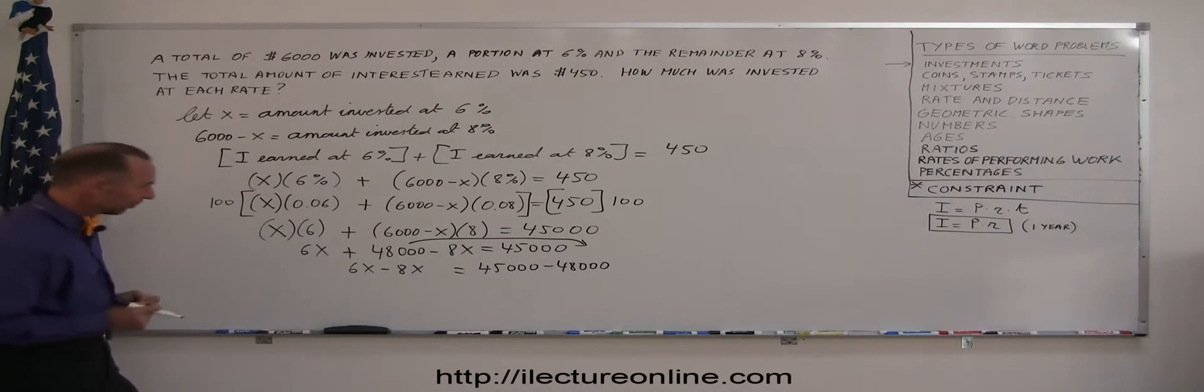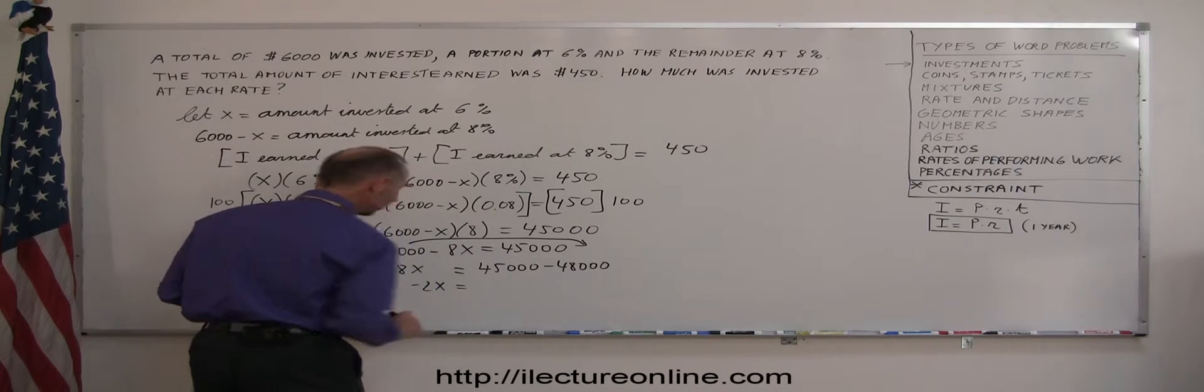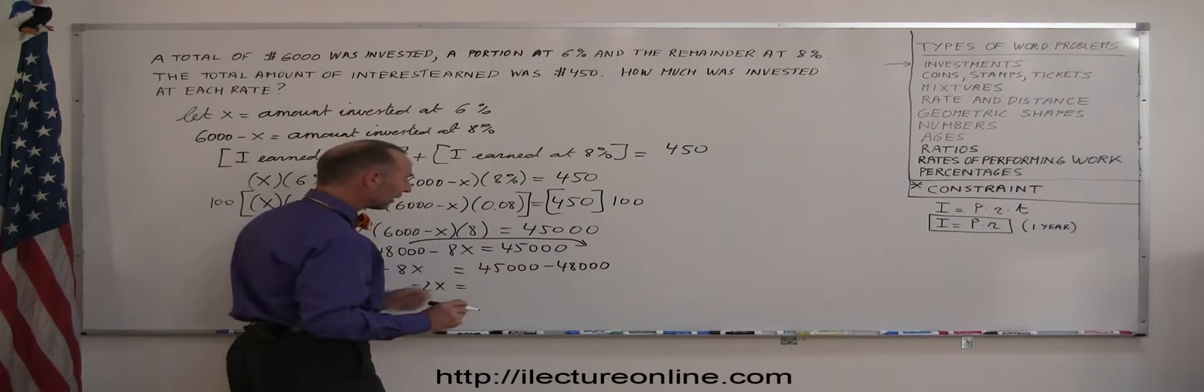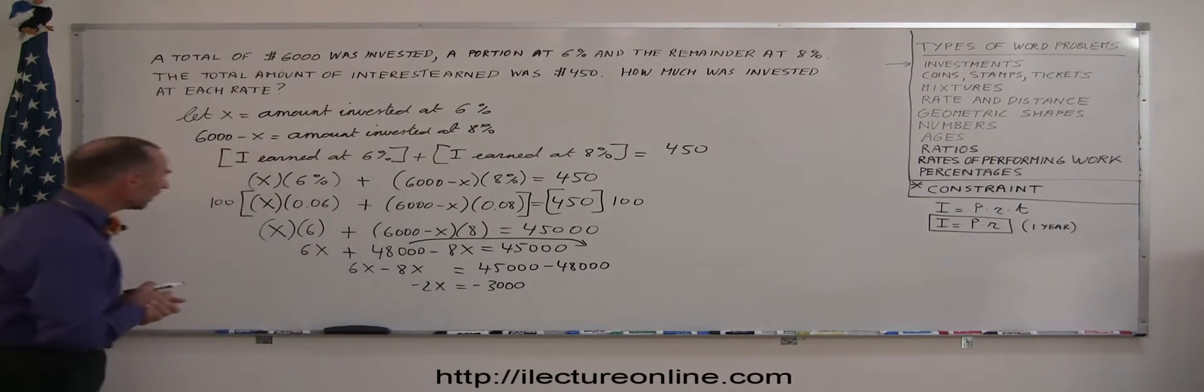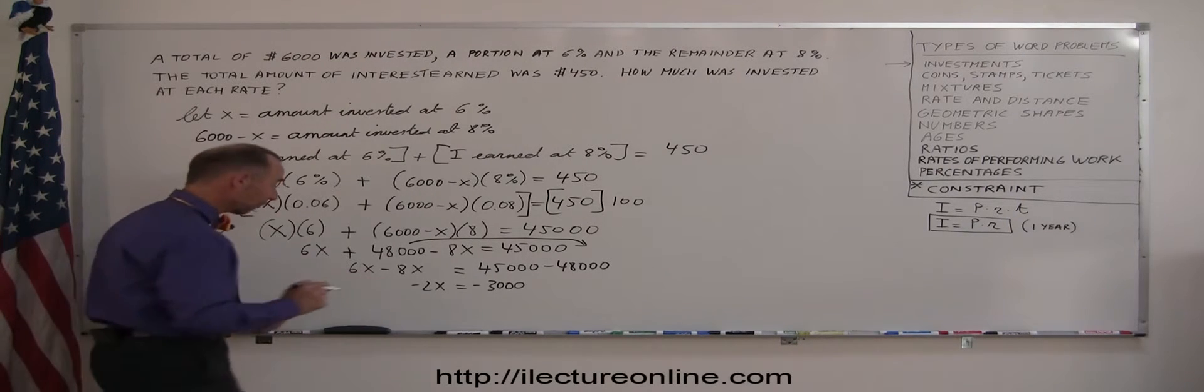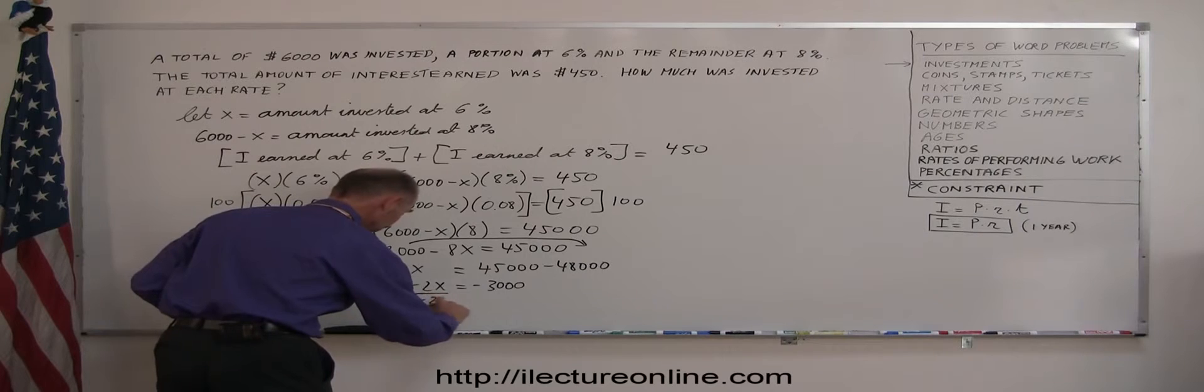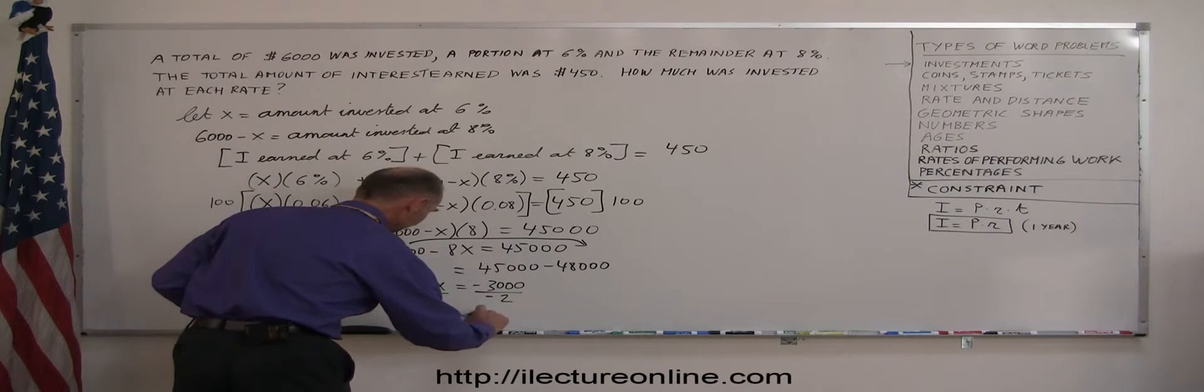Now I combine like terms. 6X minus 8X is minus 2X equals 45,000 minus 48,000 is minus 3,000. And finally, I divide both sides of the equation by the numerical coefficient of X, or the negative 2, so X equals 1,500.